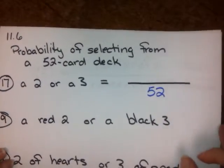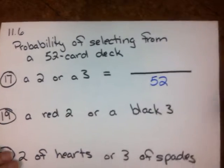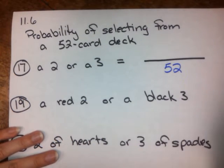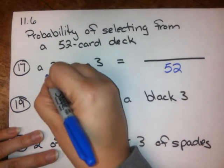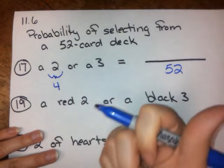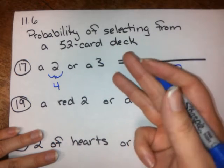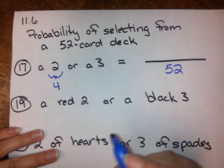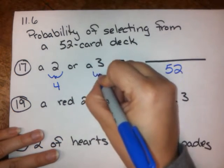So what are the number of successes here? Well, how many ways are there to draw a 2 from a 52-card deck? There are four 2s in that 52-card deck. You've got your 2 of hearts, 2 of diamonds, 2 of clubs, and 2 of spades. So there are four ways to draw a 2. How many ways are there to draw a 3? Well, there are four ways to draw a 3.